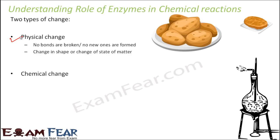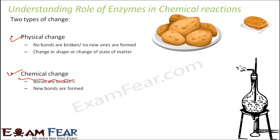On the other hand, there is another type of change called chemical change. In this, bonds are broken and new bonds are also formed, so new compounds are formed as a result. These are called chemical changes or chemical reactions, where new bonds are formed or existing bonds are broken.